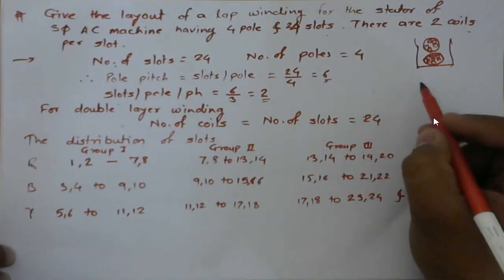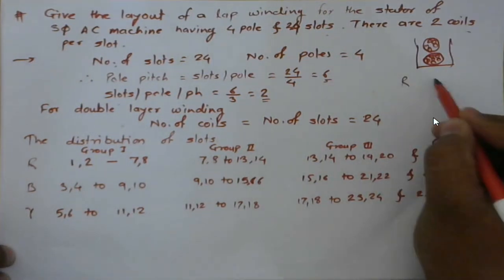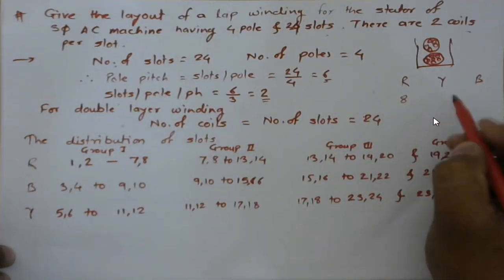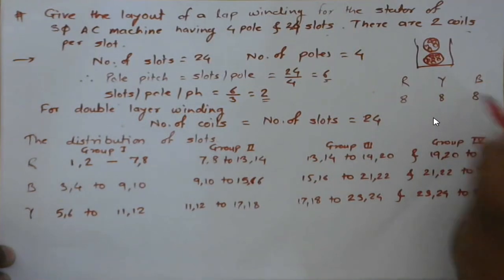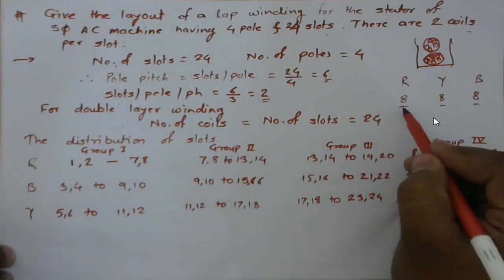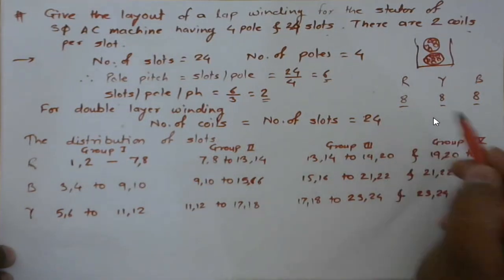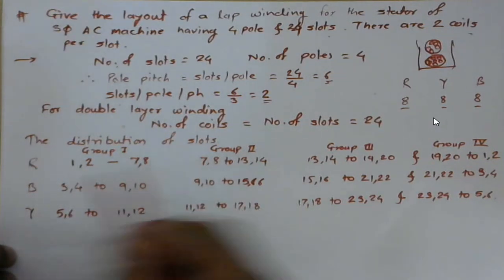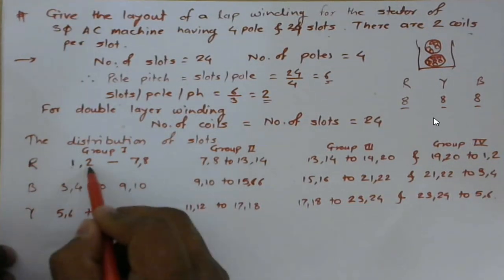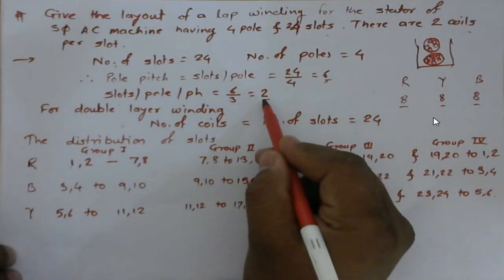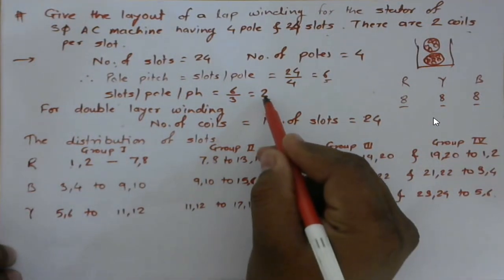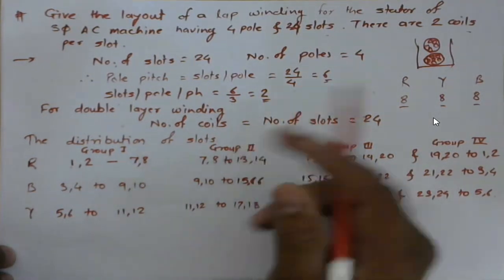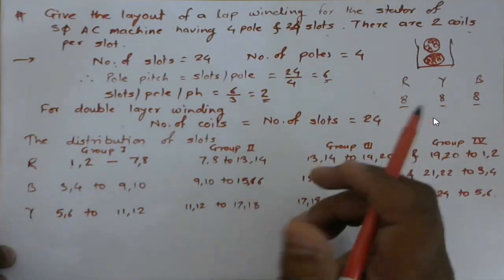Dividing 24 coils among R-phase, Y-phase, and B-phase gives 8 coils each. We make groups of two coils. For R-phase, considering the distribution of slots, slots 1 and 2 belong to R-phase. Since the slots per pole per phase is 2, under each pole there are 2 slots for R-phase, 2 for B-phase, and 2 for Y-phase.